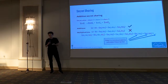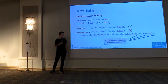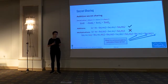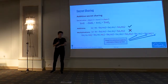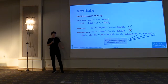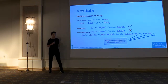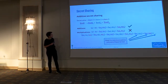Another thing to be careful with when using MPC is that in non-private algorithms, we often have branches that depend on values — for example, if X is zero we do one operation, but if X is one we do something else. In MPC, since we don't know the value of X, we cannot have these two branches and we have to find a workaround. These are the two main things to be careful about when using MPC.